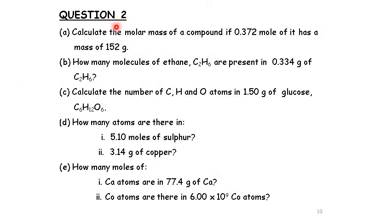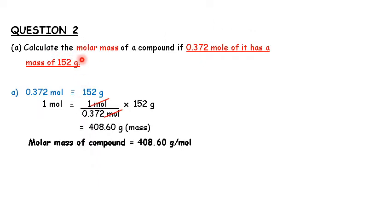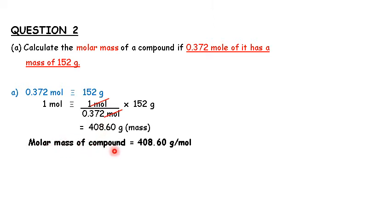Let's check Question 2. There are a few questions related to the mole concept involving molar mass, molar volume, and number of particles. For Question 2A, calculate the molar mass of a compound if 0.372 moles of it has a mass of 152 grams. The general relationship is: 0.372 moles is equivalent to 152 grams. Molar mass refers to 1 mole, so using stoichiometry: 1 times 152 divided by 0.372 — moles cancel. The molar mass of the compound equals 408.60 grams per mole.